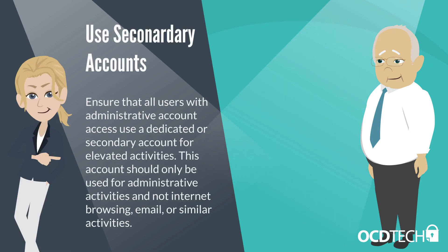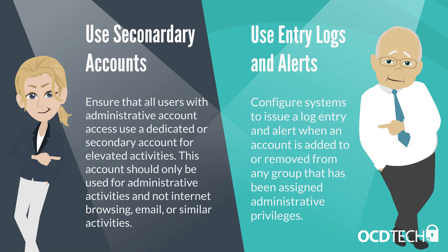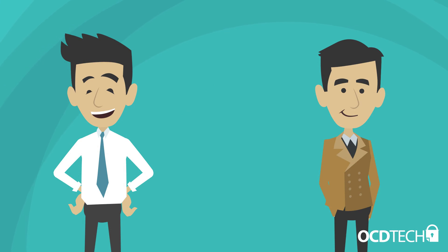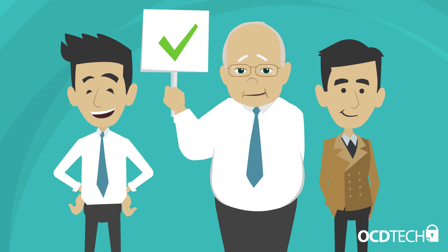Ensure that all users with administrative account access use a dedicated or secondary account for elevated activities. This account should only be used for administrative activities and not internet browsing, email, or similar activities. Configure systems to issue a log entry and alert when an account is added to or removed from any group that has been assigned administrative privileges. Finally, review and audit the use of administrative privileged functions and continuously monitor for suspicious behavior on a regular basis.